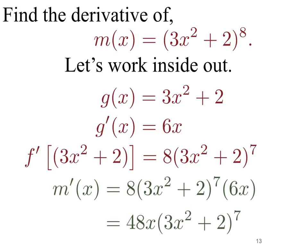Multiplying these two things together, we get m prime of x equal to 8 times 3x squared plus 2 to the seventh power, times 6x. We can rearrange the terms: 8 times 6 is 48, and there's an x, so we pull that to the front. After cleaning it up we get 48x times 3x squared plus 2 to the seventh power.